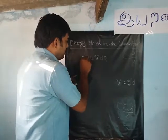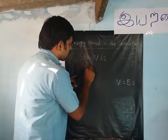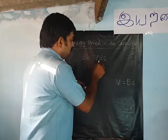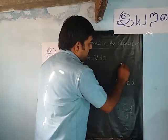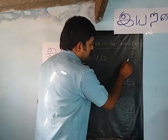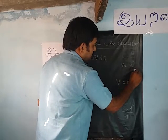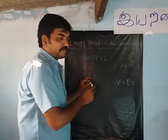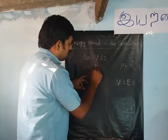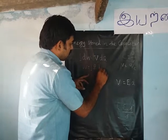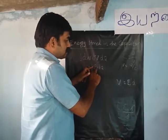Integrating dw, w is equal to the integral of v into dq. Since c is equal to q by v, therefore v is equal to q by c. So substituting, w is equal to the integral of q by c into dq.